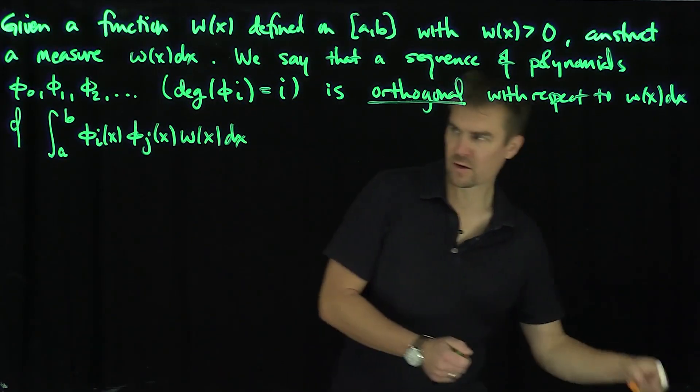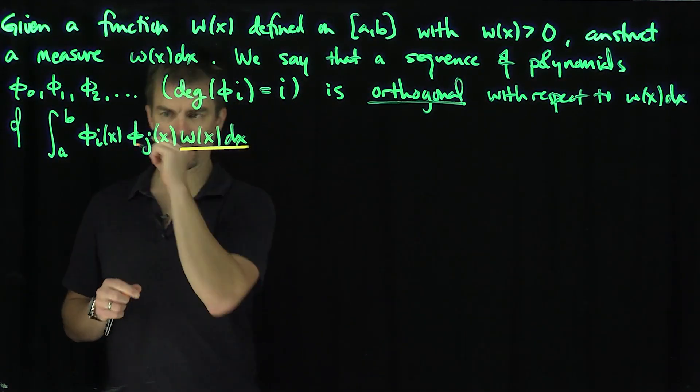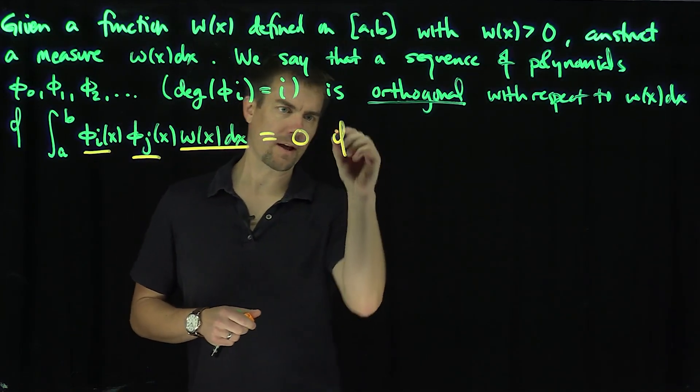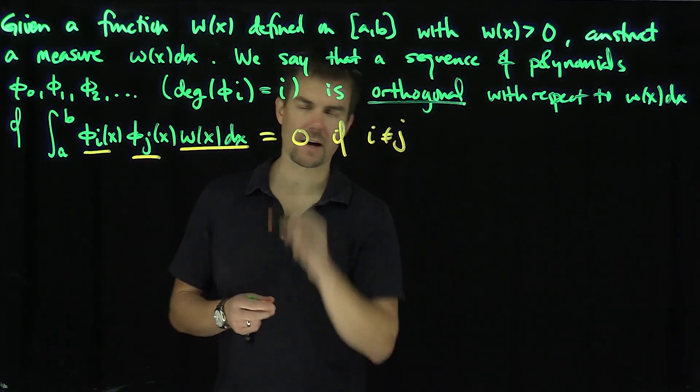the integral from a to b of φᵢ(x)φⱼ(x)w(x)dx—so there's our measure and there's our interval—is equal to zero if i is not equal to j.